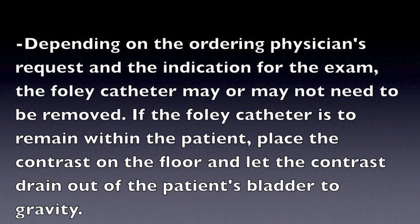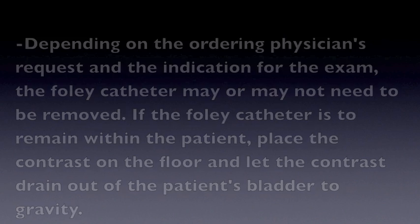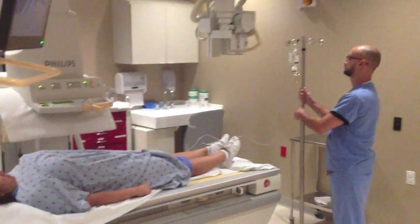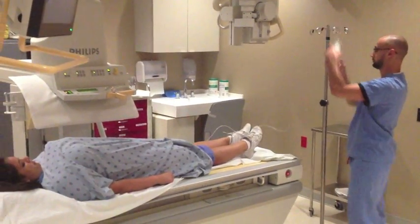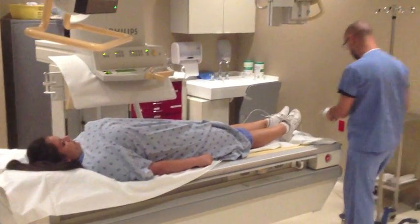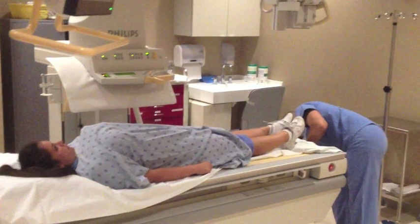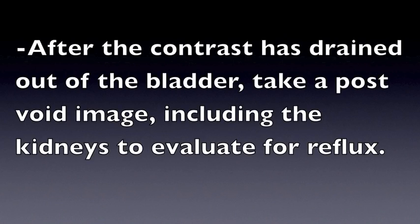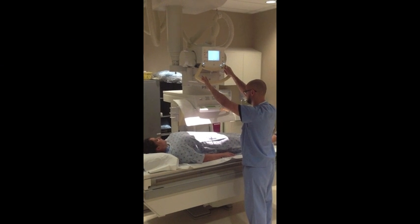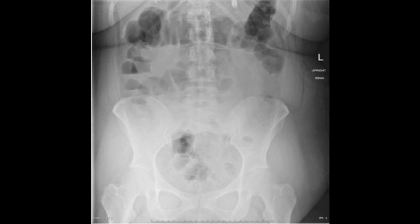Depending on the ordering physician's request and the indication for the exam, the Foley catheter may or may not need to be removed. If the Foley catheter is to remain within the patient, place the contrast on the floor and let the contrast drain out of the patient's bladder by gravity. After the contrast has drained out of the bladder, take a post-void KUB image including the kidneys to evaluate for reflux. This is a post-void KUB image.